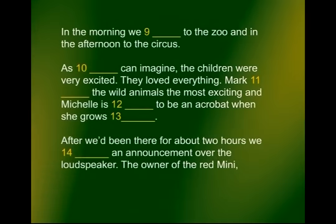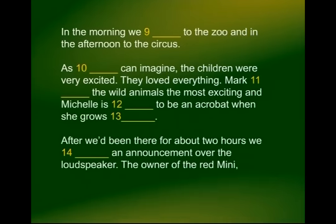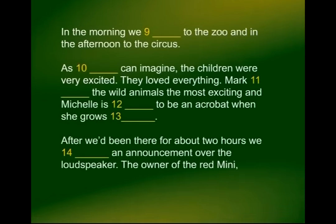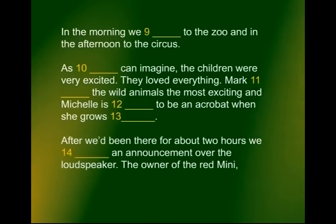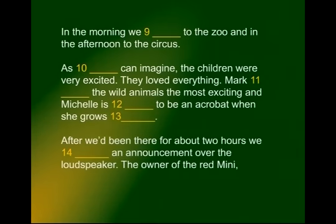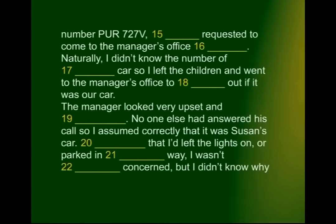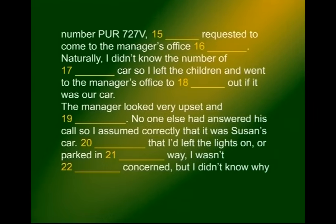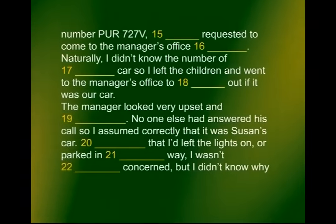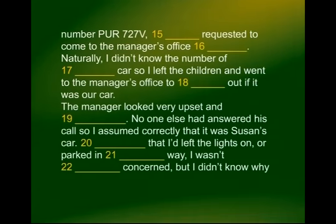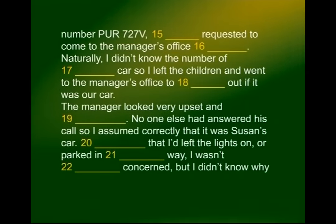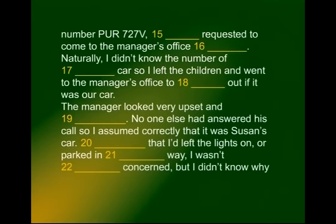'After we'd been there for about two hours, we — an announcement over the loudspeaker.' Since she is describing something that took place in the past, it has to be 'heard' — we heard an announcement. 'The owner of the red mini, number PUR727V, — requested to come to the manager's office —.' It was requested — not 'is' — because the lady is describing an event that took place in the past. Was requested to come to the manager's office immediately.